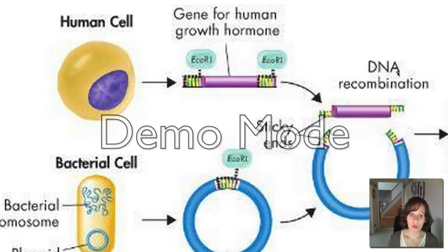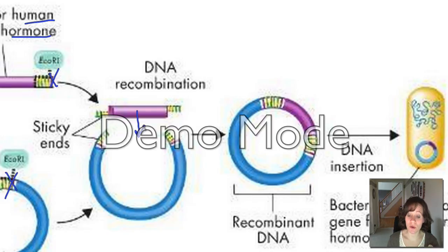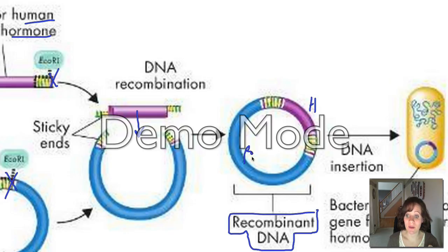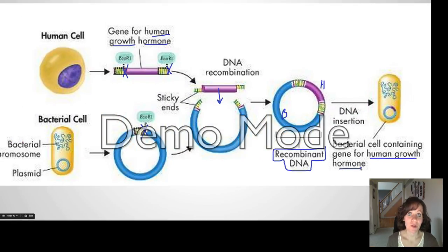Here's an example. The gene of interest we want is the gene for human growth hormone. We take that from a human's DNA and cut it with restriction enzymes. We also take a bacterial plasmid and cut it with the exact same restriction enzyme, so we can insert this gene for human growth hormone into the plasmid. Now we have what's called a recombinant plasmid — it has DNA from two different sources: human DNA in purple and bacterial DNA in blue. We insert that plasmid into a bacterial cell, grow the bacteria, and now we have lots of human growth hormone. If you have a disease where you're lacking that hormone, the medicine you're getting likely comes from this process.